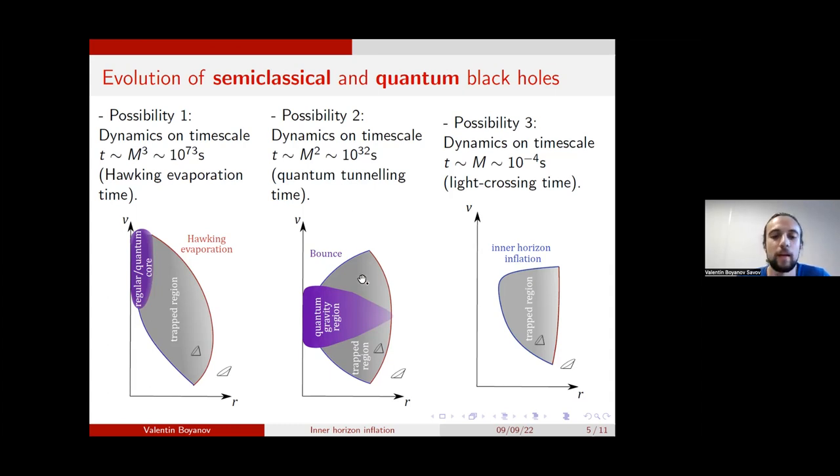Now, a second possibility is that these quantum effects do propagate outwards, and it has been suggested that in these cases, the lifetime of the trapped region will be of the order of 10 to the 32 seconds. So it would scale as the square of the mass, rather than the cube of the mass, as in the Hawking effect, which for solar mass objects leads to a much shorter time scale, although still very long in astrophysical terms, still longer than the lifetime of the universe.